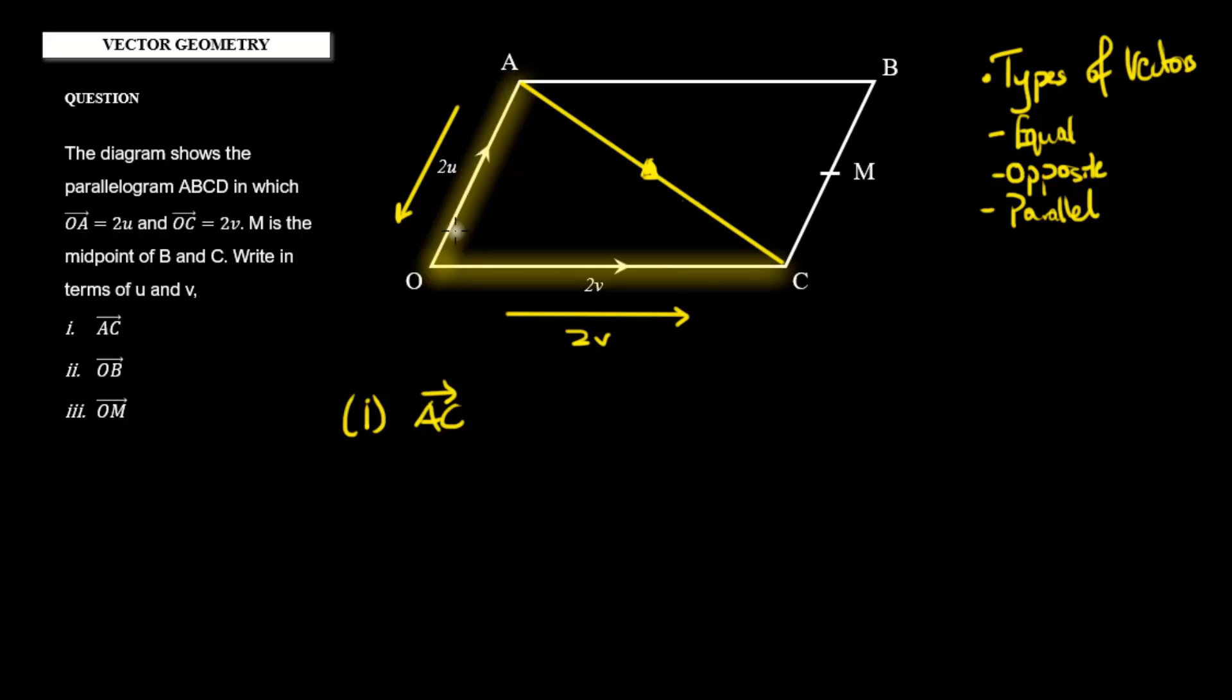But I need to figure out this vector here. OA is 2u, and this vector is going in the opposite direction, so it's the same size but the opposite direction. So that means it must be negative 2u. Therefore, AC we can say is equal to 2v minus 2u.